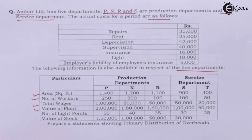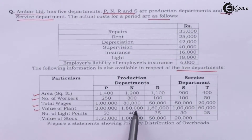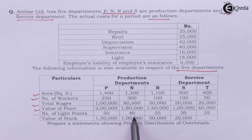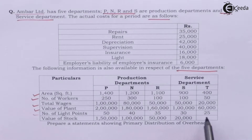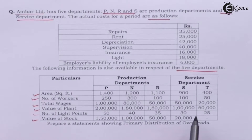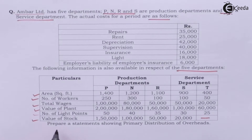Value of plant: department P 2 lakhs; department N 1 lakh 80,000; department R 1 lakh 60,000; department S 1 lakh; department T 60,000. Number of light points: department P 50; department N 40; department R 30; department S 20; department T — there is no stock.